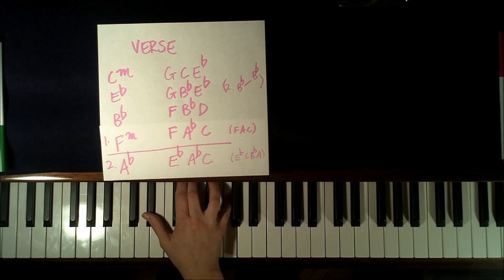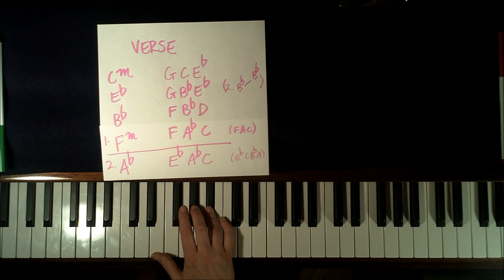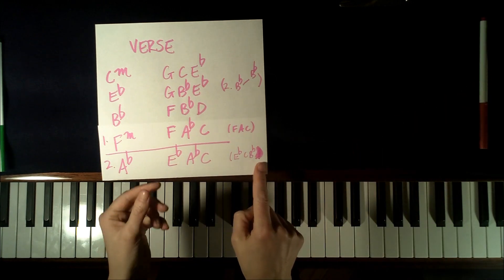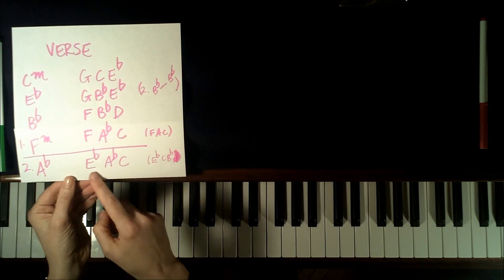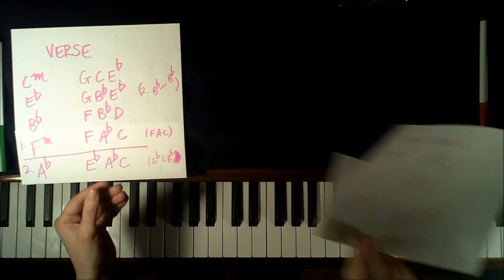And then my right hand is going to play this: C, Eb, C, Bb. So my left hand is actually just going to play Eb, C, Bb. So that takes us from the verse into the pre-chorus.